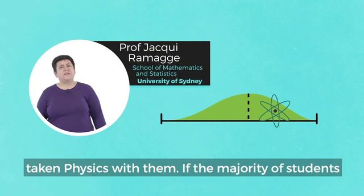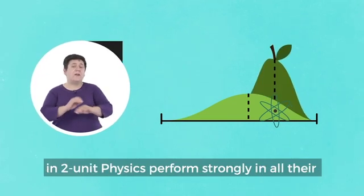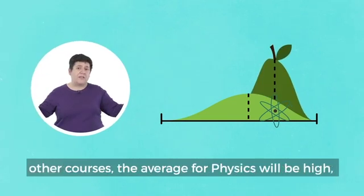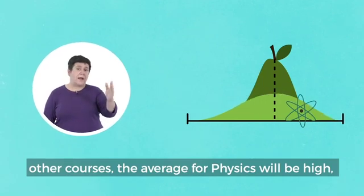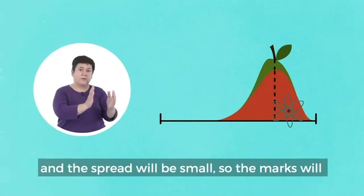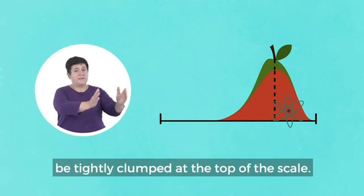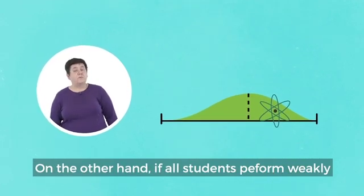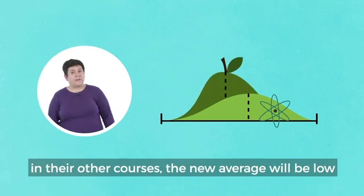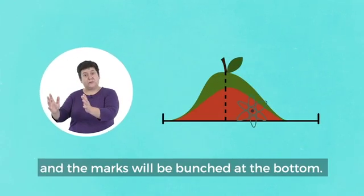If the majority of students in two-unit physics perform strongly in all their other courses, the average for physics will be high and the spread will be small, so the marks will be tightly clumped at the top of the scale. On the other hand, if all students perform weakly in their other courses, the new average will be low and the marks will be bunched at the bottom.